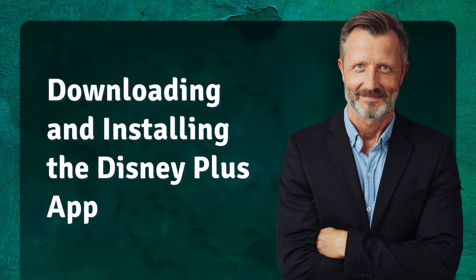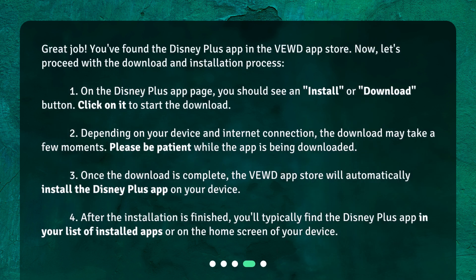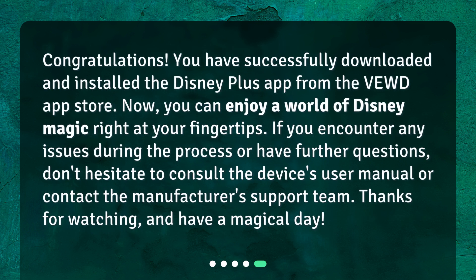You've found the Disney Plus app in the Viewed App Store. Now, let's proceed with the download and installation process. On the Disney Plus app page, you should see an Install or Download button — click on it to start the download. Depending on your device and internet connection, the download may take a few moments, so please be patient. Once the download is complete, the Viewed App Store will automatically install the Disney Plus app on your device. After installation, you'll find the Disney Plus app in your list of installed apps or on the home screen. Congratulations! You have successfully downloaded and installed the Disney Plus app from the Viewed App Store.